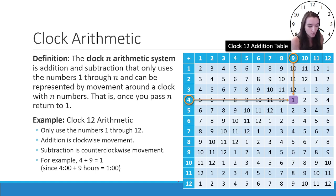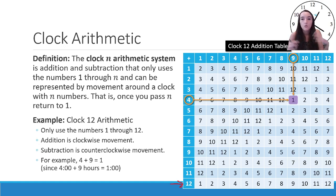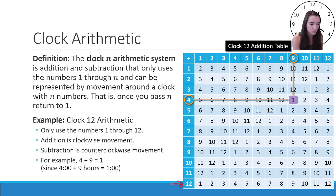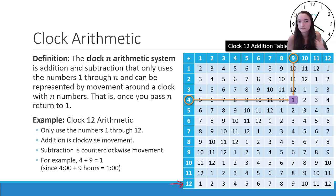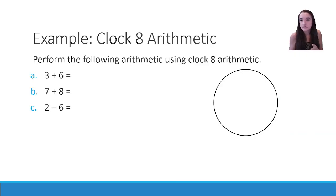If I add 12 hours, I just get back where I started — 1 o'clock plus 12 hours is 1 o'clock again. So adding 12 gives me a repeat of whatever I added it to. What about clock arithmetic with other numbers, ones we're less familiar with?